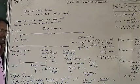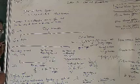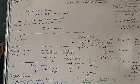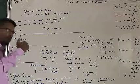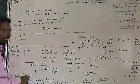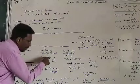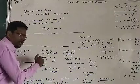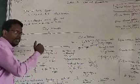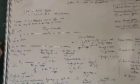Non-terminating decimals means you will not get remainder 0 when you divide — it goes on. The dots indicate that they are non-terminating.